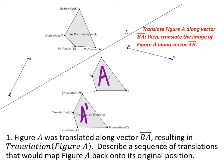So on this one, you would translate figure A along the vector BA, like it said. And then to get it back to the pre-image, we would take it and translate it along the vector AB.